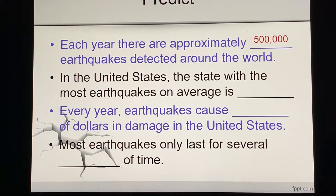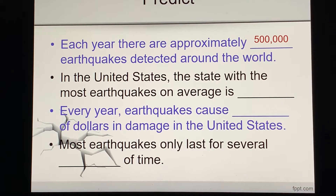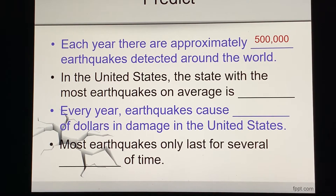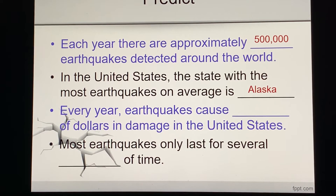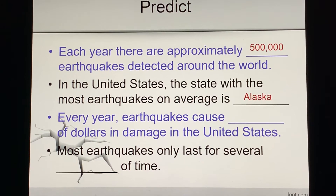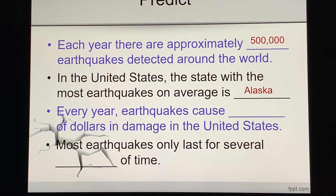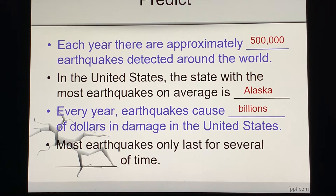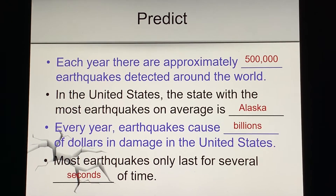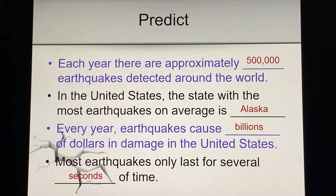500,000. In the United States, the state with the most earthquakes on average — which state has the most earthquakes? Alaska. I bet some of you were thinking California, but it's Alaska. Every year, earthquakes cause billions of dollars of damage in the United States. And most earthquakes only last for seconds, because most earthquakes are not even detectable by humans, only by machines or by animals. They're very short-lived and very small, but then some of them are big.